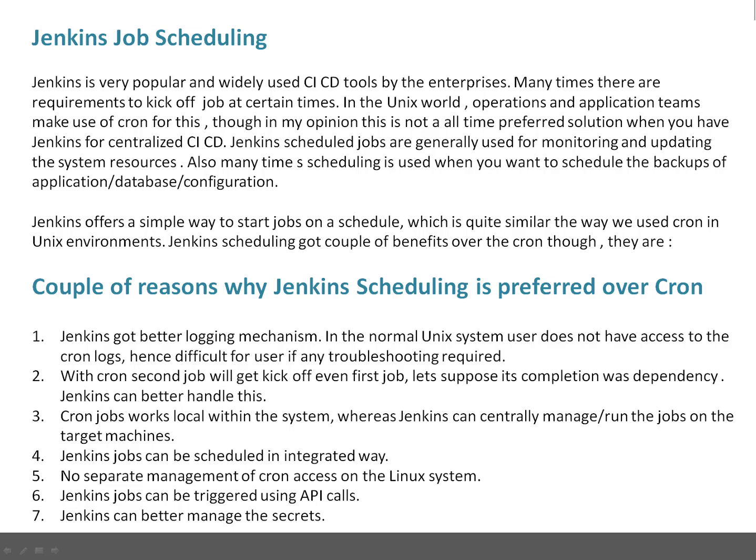Jenkins jobs can be triggered using API calls because Jenkins supports a REST API. So you can easily kick off a job with API calls. Jenkins can also better manage secrets — with cron you may hard-code credentials that are not encrypted, but with Jenkins you can encrypt and securely store your credentials. That's another benefit of Jenkins over normal cron scheduling.